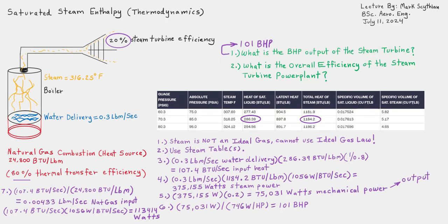We identify the output power as 75,031 watts of mechanical power at the turbine, and the input power as 113,414 watts. Dividing the output power into the input power — 75,031 watts mechanical divided by 113,414 watts of burning natural gas combustion — translates to 0.6616, or 66.2% overall efficiency.